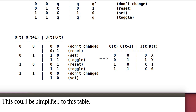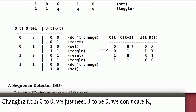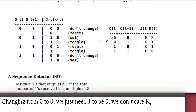This can be simplified to a concise table. Changing from 0 to 0, we just need J to be 0 and don't care K — entry: 0, don't care. Changing from 0 to 1, we just need J to be 1 and don't care K — entry: 1, don't care. Changing from 1 to 0, we just need K to be 1 and don't care J — entry: don't care, 1. And 1 to 1 is don't care, 0. This is the excitation table showing how to bring the flip-flop from state Q(t) to Q(t+1).